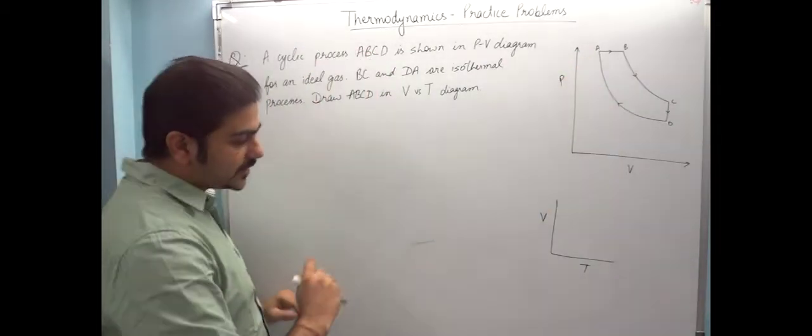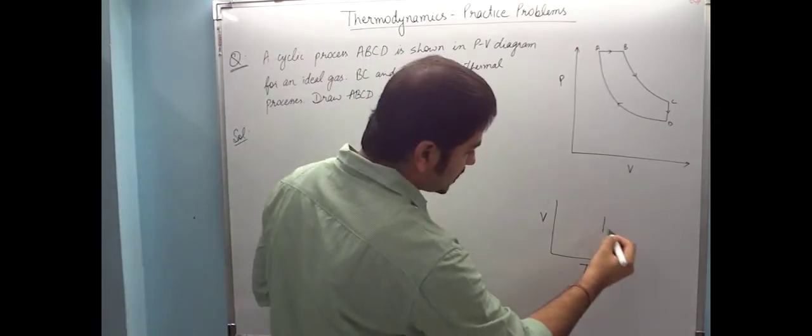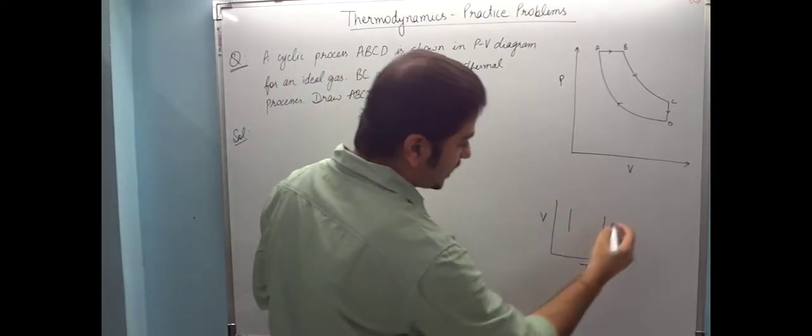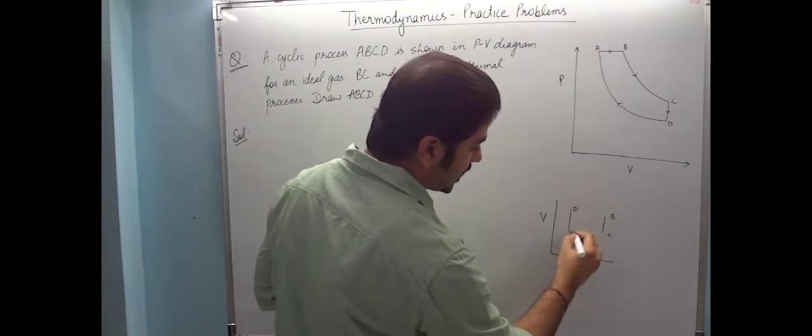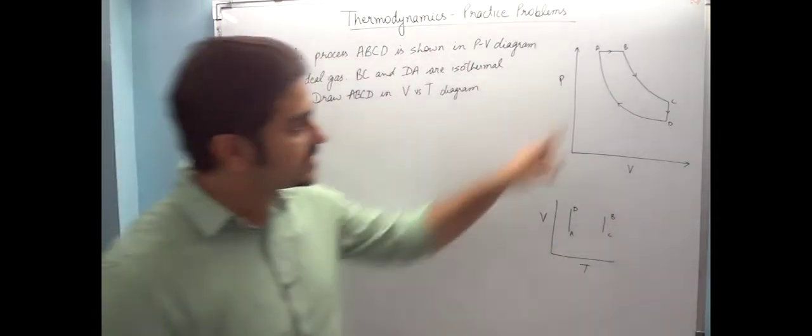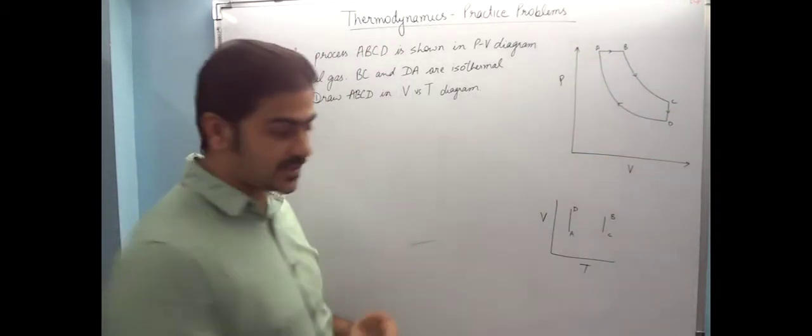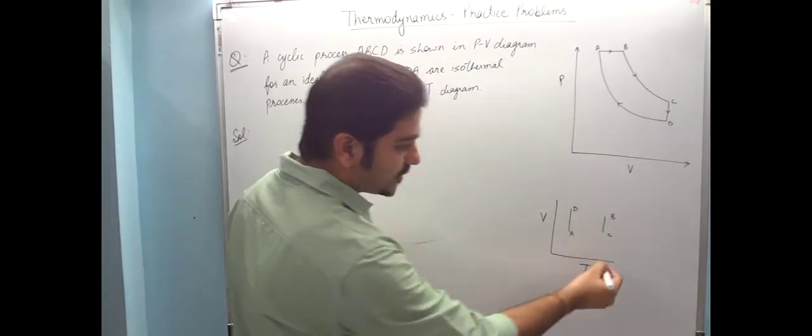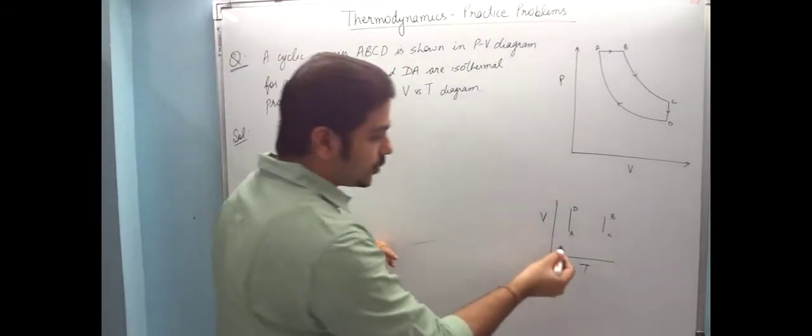So this is confirmed that BC and DA - BC or DA is like this, B or C, D or A. So since BC is isothermal, that means temperature is remaining constant, that means it will be a straight line. And since DA is also isothermal, it will be a straight line.